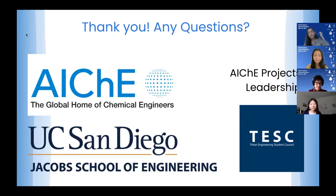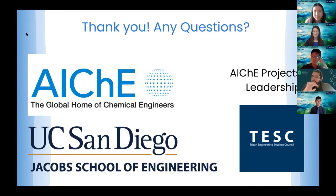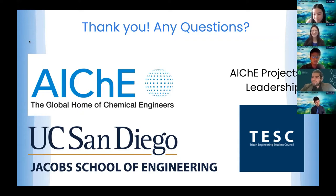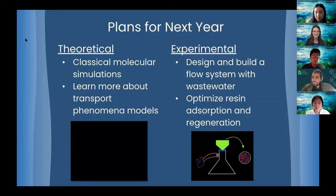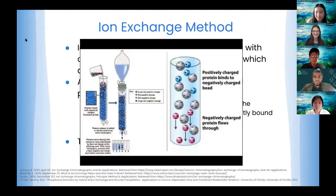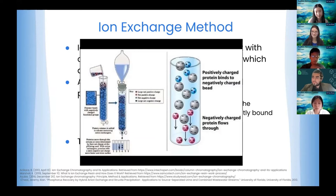Question: What kind of resin are you using when you're doing the flow-through experiments? Answer: We're using a weak base anion resin. The beads in the demonstration diagram are shown as negatively charged attracting positive ions, but in the real situation the polarity should be reversed — the resin should be positively charged, since we're dealing with negatively charged phosphate ions.